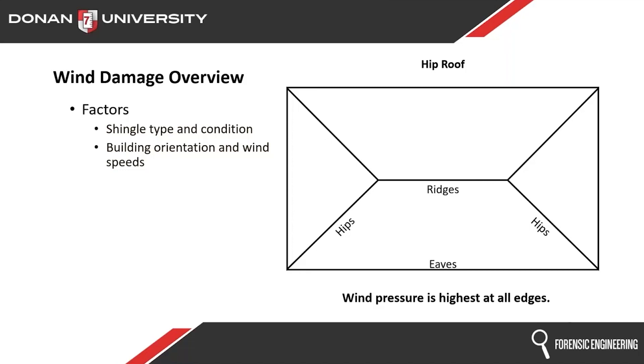If this was an up and over, like a gable roof, then also the rake — they call it the rake ends. The rake ends would be very susceptible as well.